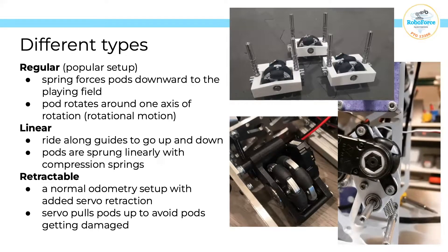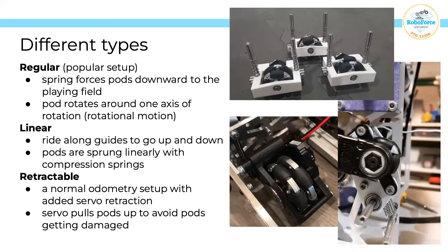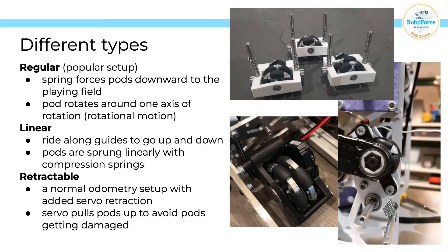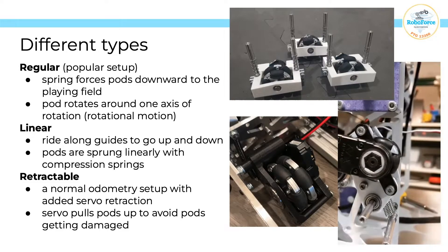There are three main types of odometry pods: regular, linear, and retractable. Regular is the most popular setup — just a pod with an extension spring that forces it downward toward the playing field, rotating around one axis. For linear odometry, there's a set of guides the pod moves up and down, with compression springs on the guides. In the top picture you can see the guides and compression springs. For retractable, it's a normal odometry setup but with an added manual servo retraction — so in last year's game, before teams ran across the barrier, they could retract the odometry pod up and safely go over without it getting damaged.